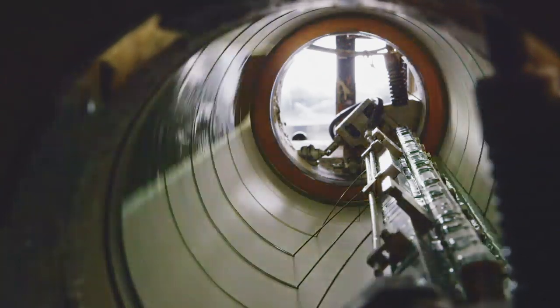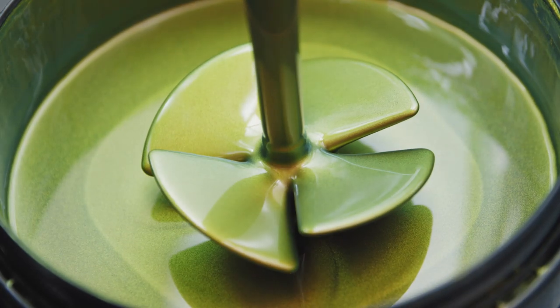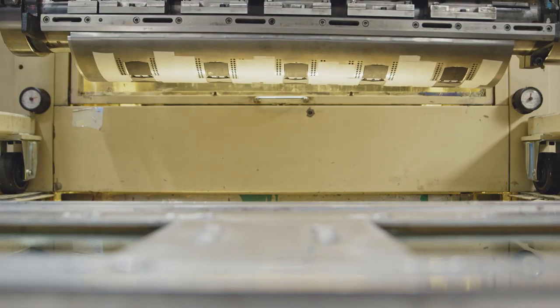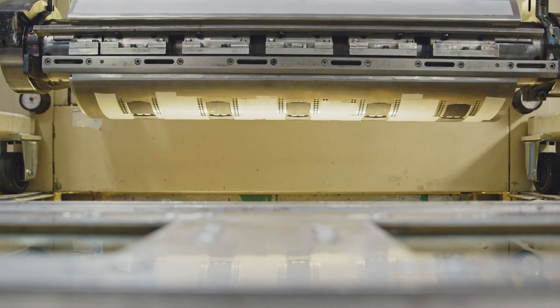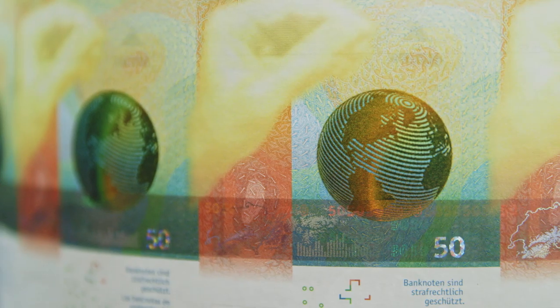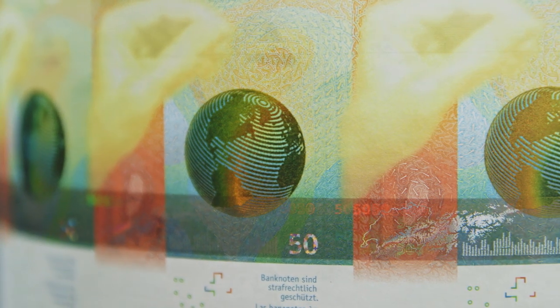The appearance and colour of the globe change depending on the viewing angle. Magnetic pigments are added to the ink in order to achieve this effect. The pigments are aligned using a magnetic field. If the note is tilted sideways, a golden arc moves across the globe.